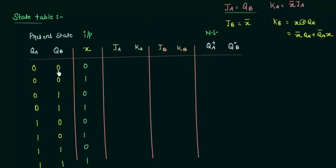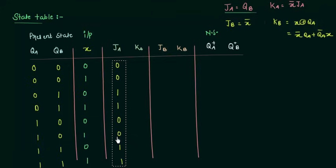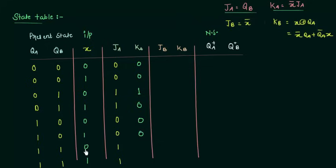JA is simply QB, so whatever is the value of QB it's going to be JA. Now for KA — KA equals X' · JA. The complement of 0 is 1, ANDed with 0 gives 0; 0·0 gives 0; 1·1 gives 1; 0·1 gives 0; 1·0 gives 0; 0·0 again gives 0; 1·1 gives 1; and finally 0·1 gives 0. So we are done with JA and KA.